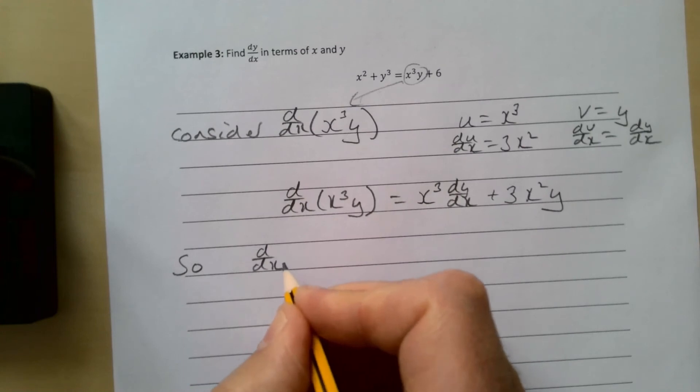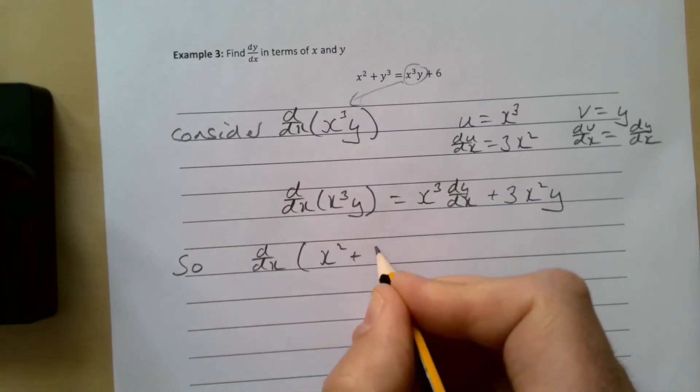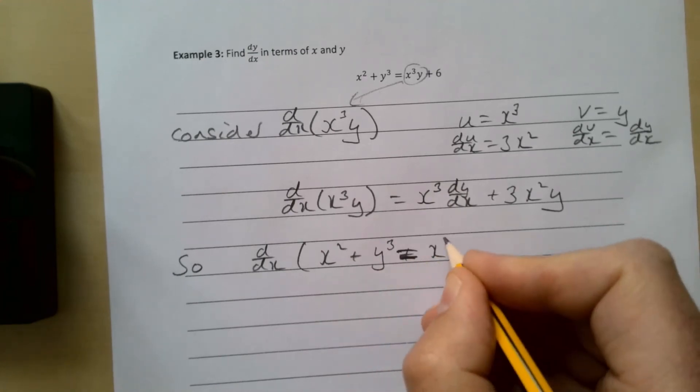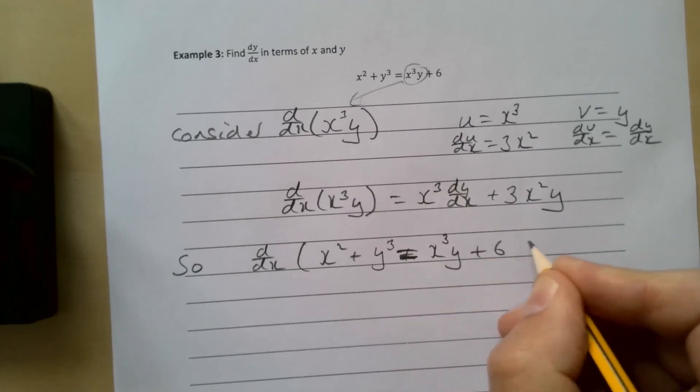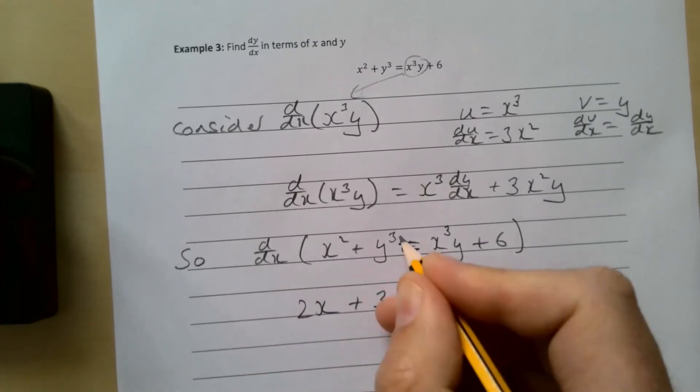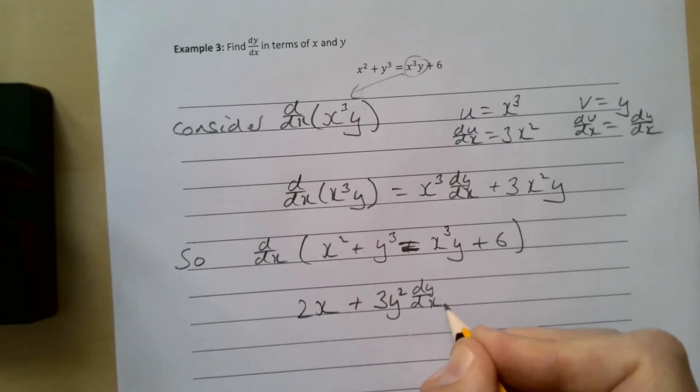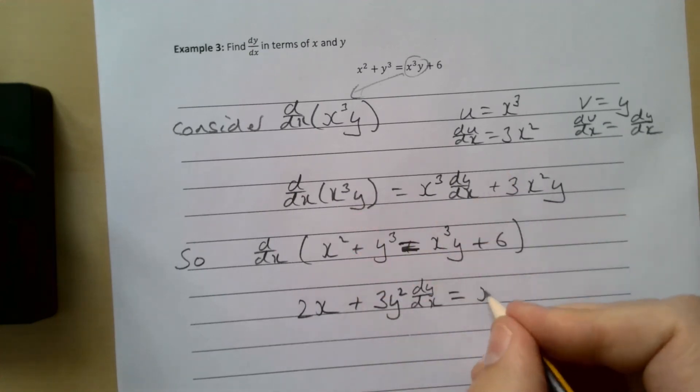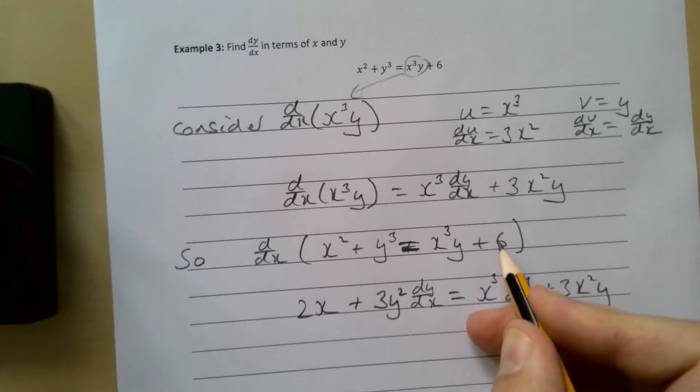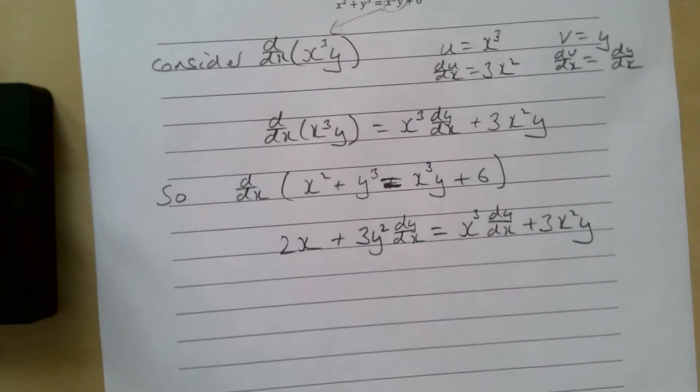So d/dx of x² + y³ + x³y = 6 gives us 2x + 3y² dy/dx equals x³ dy/dx + 3x²y. And 6 differentiated just disappears. We're almost there, doing well.